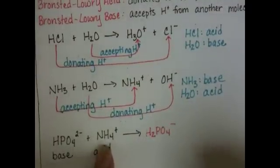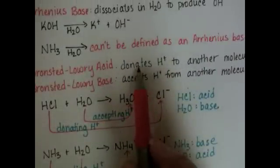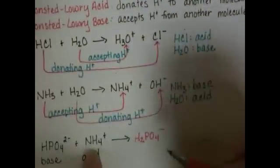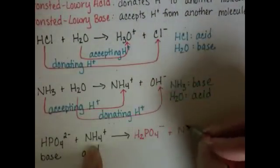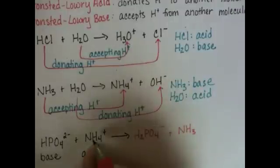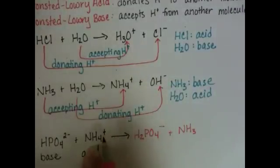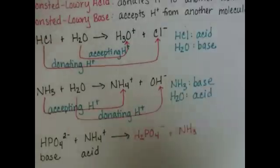And NH4+, because it's the acid, donates H+. So we want to go from NH4 to NH3. We're losing one of the hydrogens. And we also want to lose a plus charge because we're donating an H+. So this is going to go from a positively charged cation to neutral ammonia.